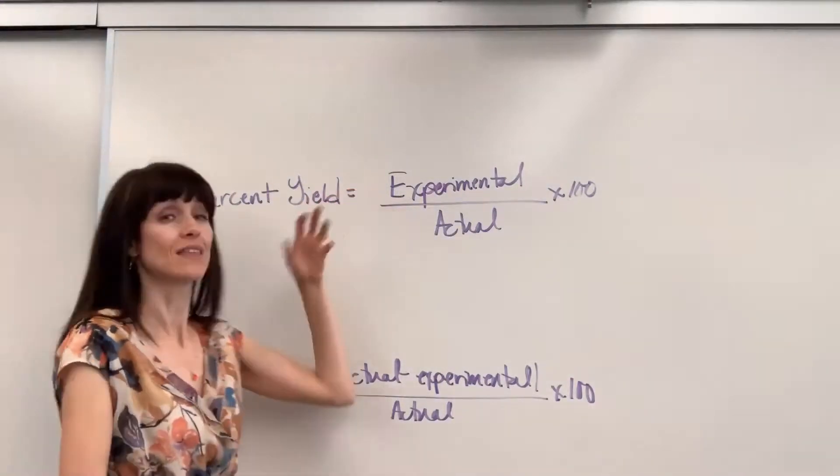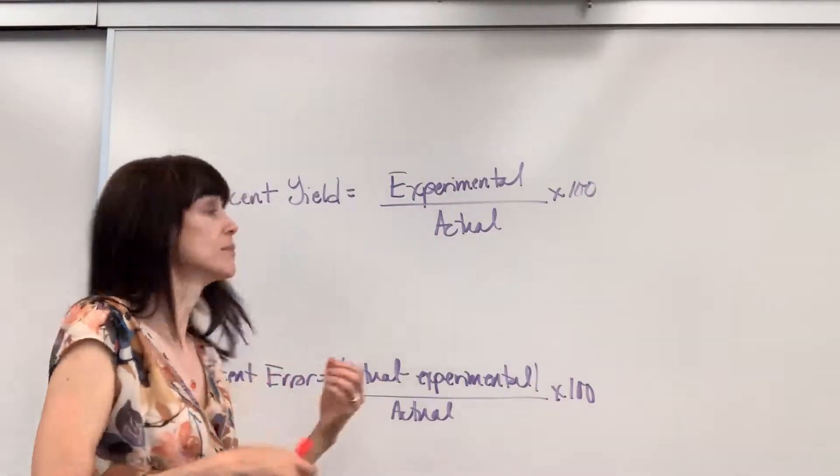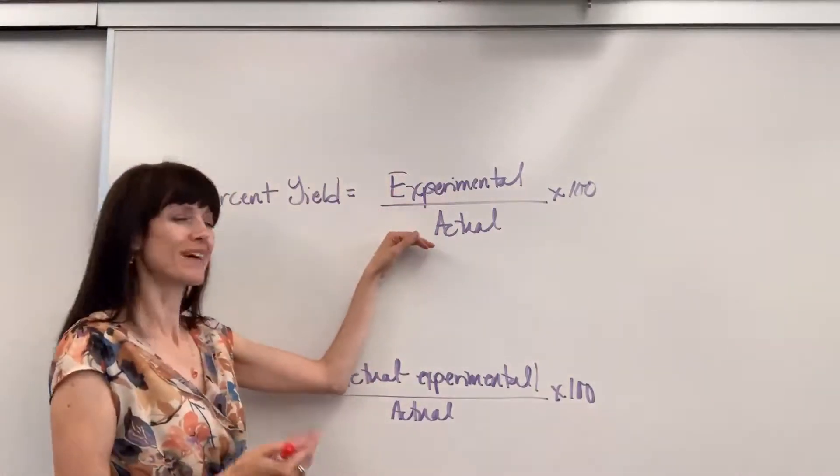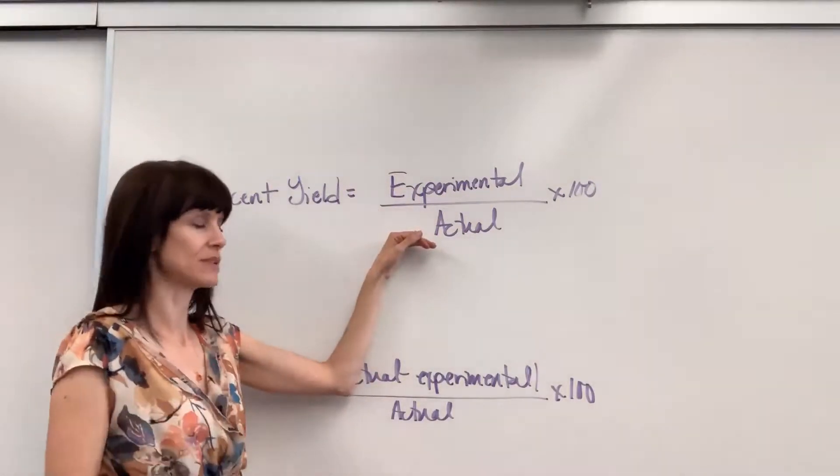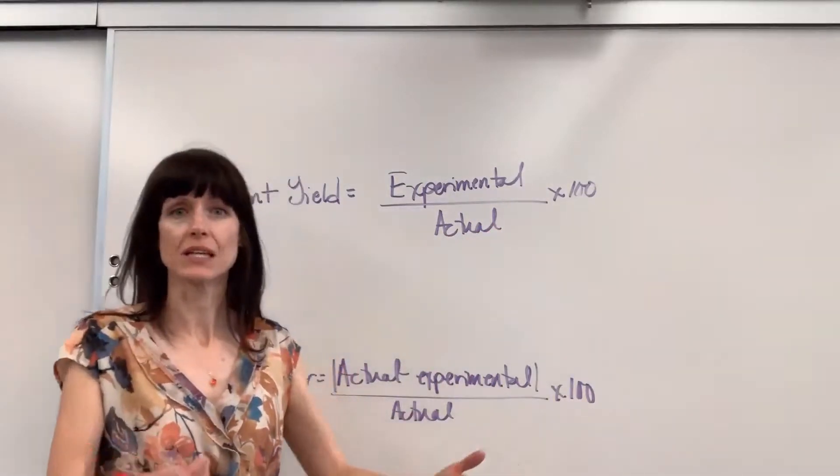So percent yield, you take the value that you got in the lab, experimental value, divided by the actual value, the accepted value, multiply that by 100.